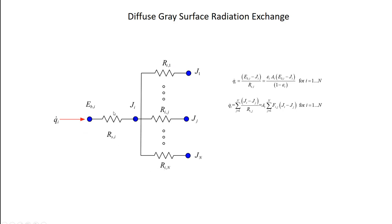Well, I get one equation associated with this resistor. It says that Q dot I is EBI minus JI divided by RSI. Or if I substitute in for RSI, it gives me this equation, and I can then write that equation for every single surface. So here's N equations.